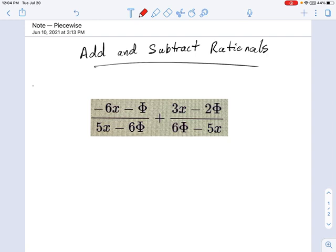If you look at the denominators 5x minus 6 phi and 6 phi minus 5x, those are different denominators, they are uncommon.